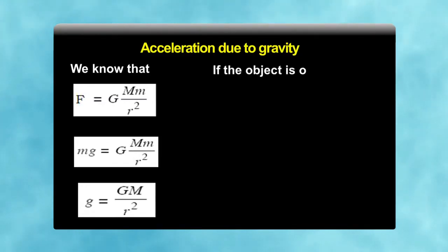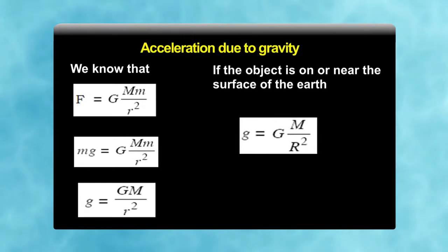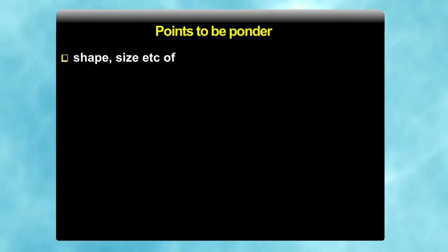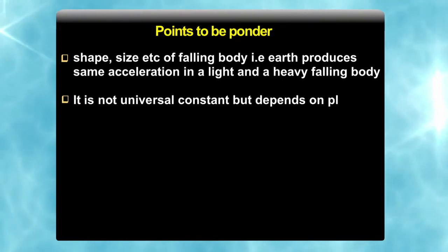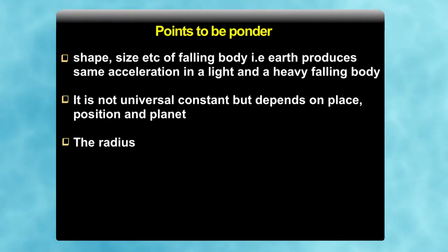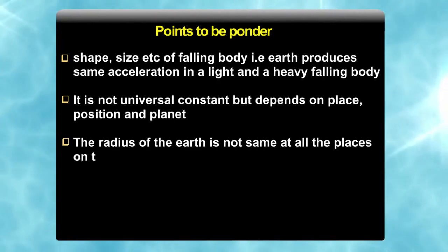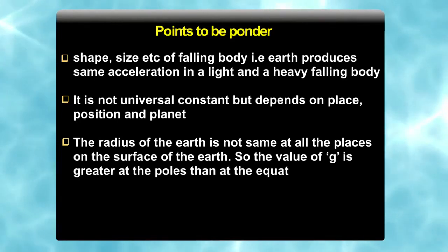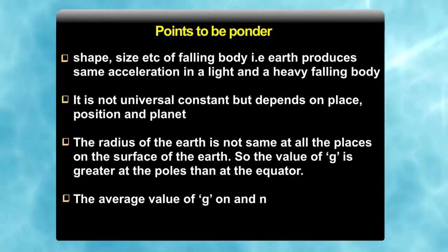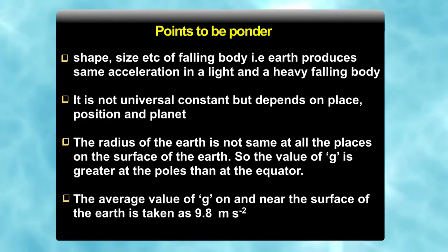What if the object is on or near the surface of the earth? Then how to take about the distance r? Well, the distance r in equation will be equal to the radius of the earth. Thus, g is equal to G M divided by R square. This is independent of shape, size of falling body, which means that earth produces same acceleration in light and a heavy falling body. Second thing, it is not a universal constant, but depends on place, position and planet. The radius of earth is not same at all places on the surface of earth. So, the value of g is greater at the poles than at the equator. The average value of g on and near the surface of the earth is taken as 9.8 meter per second square.